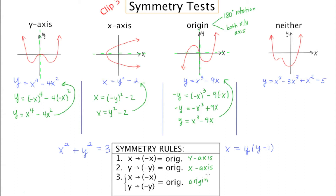An observation: for y-axis symmetry, notice how the powers of x were all even — these types of graphs are sometimes called even functions. Similarly, if the powers of y are even, you'll often get x-axis symmetry. And if the powers are odd, you'll often get origin symmetry.